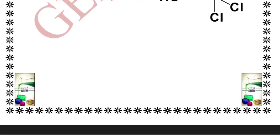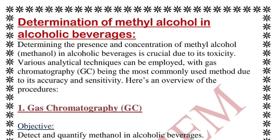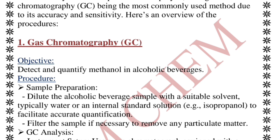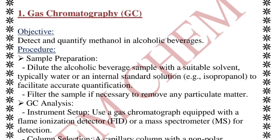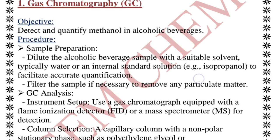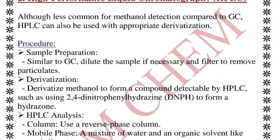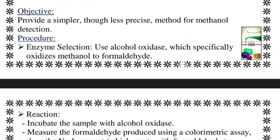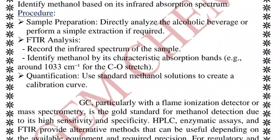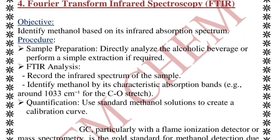The last topic is determination of methyl alcohol in alcoholic beverages. We detect the presence and concentration of methyl alcohol using various analytical techniques. Gas chromatography is one method. Next we have HPLC — more or less the procedure is the same but the chemicals change, so you need to read through each one. We also have enzymatic assay, as seen in the previous case, and FTIR — these are the four effective methods for methanol detection.